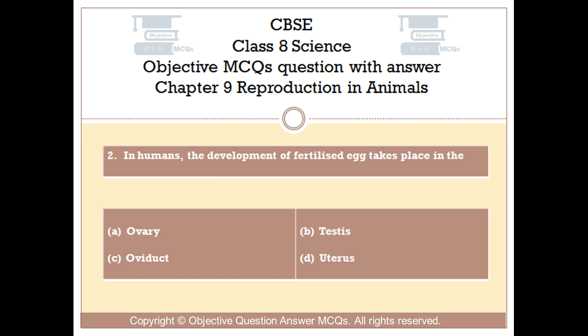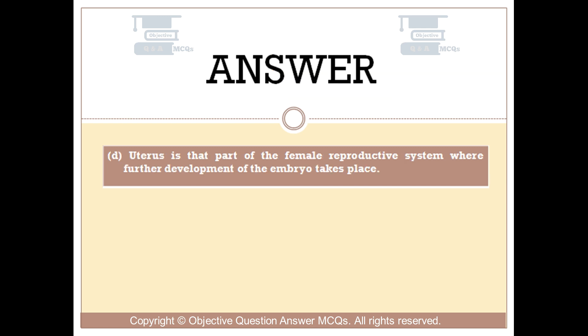The right answer is Option D. Uterus is that part of the female reproductive system where further development of the embryo takes place.